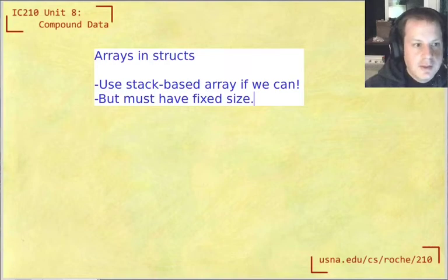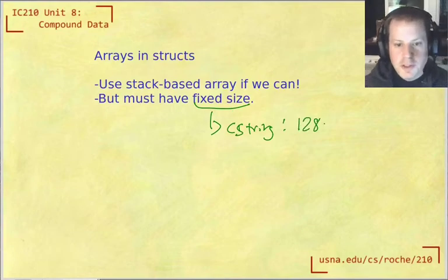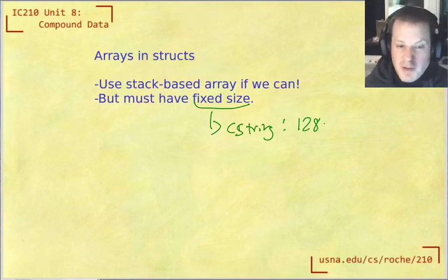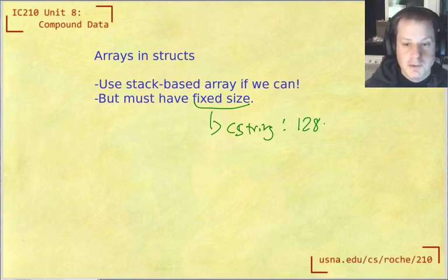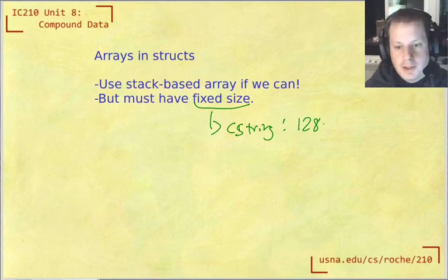That's why this makes a lot of sense for something like strings. With a C string, that fixed size might be 128 — that's what we've used in this class, although it could be something else, whatever you want. If you have an array of ints or something, that might make sense sometimes but not other times. We'll talk more about general arrays in structs a little bit later. But for now, if we're just thinking about strings in a struct, using a type like C string is going to be fine.